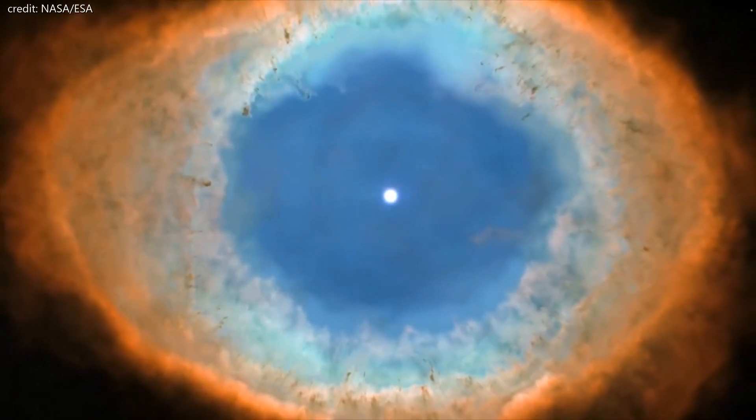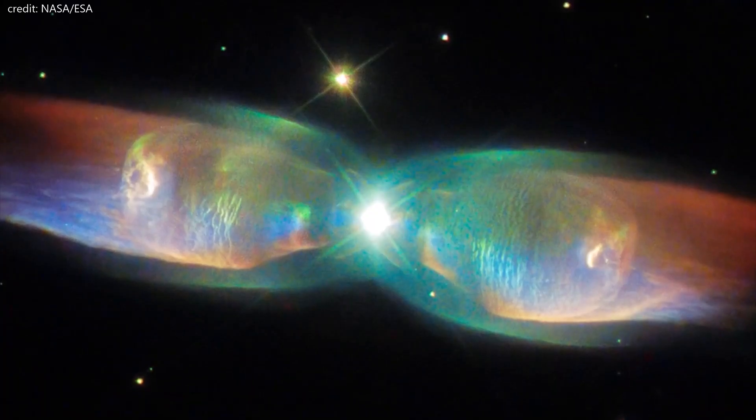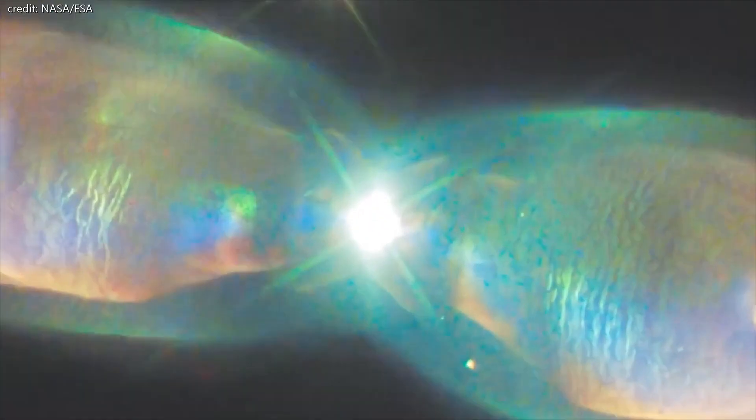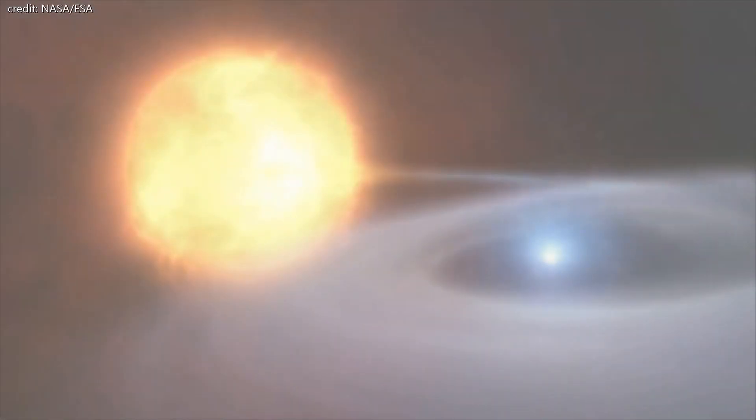Ordinary planetary nebula have one star at their center, but bipolar nebula has two in a binary star system. Astronomers have found that the two stars in this pair each have around the same mass as of the Sun.